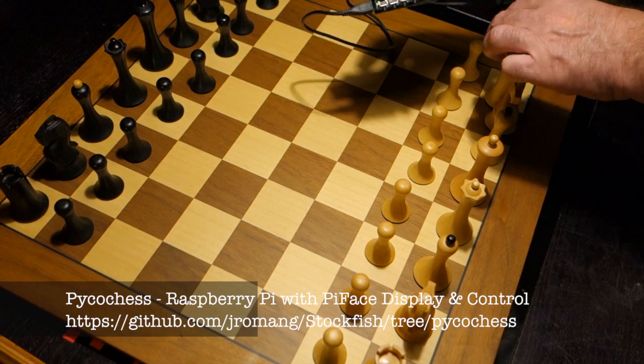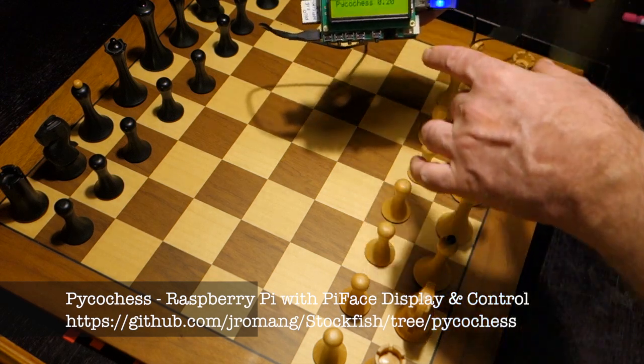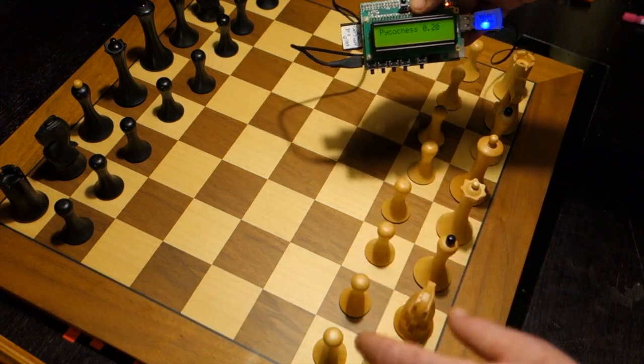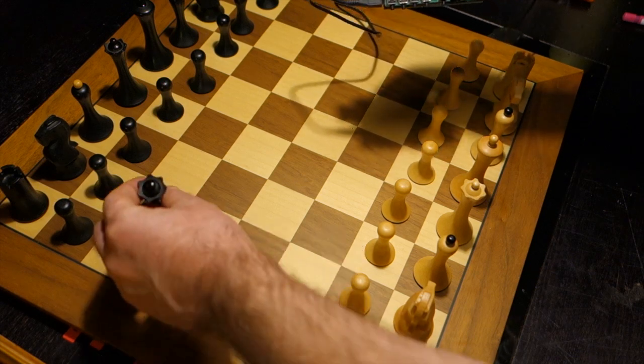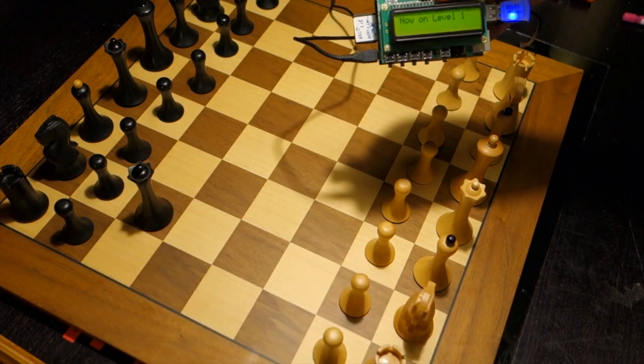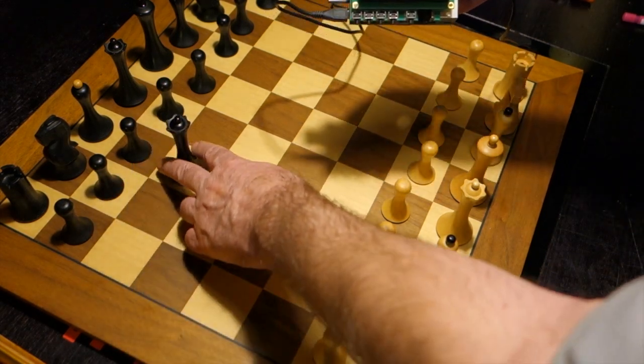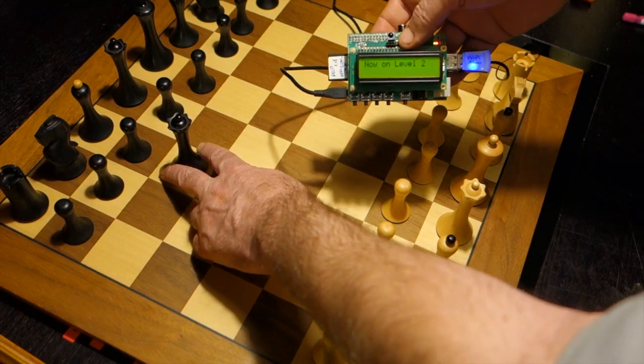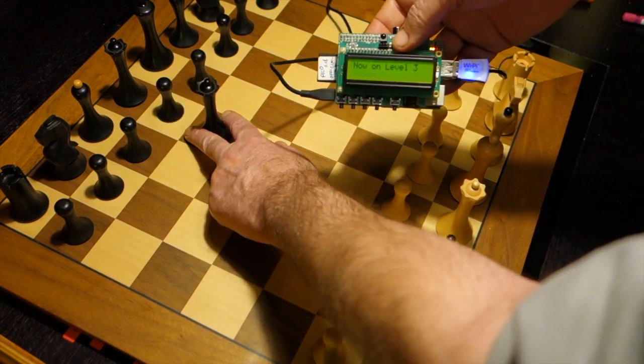It is the same software interface as with Pico chess. For example, we can select the level with the Black Queen. Like so. Level 3, level 4.